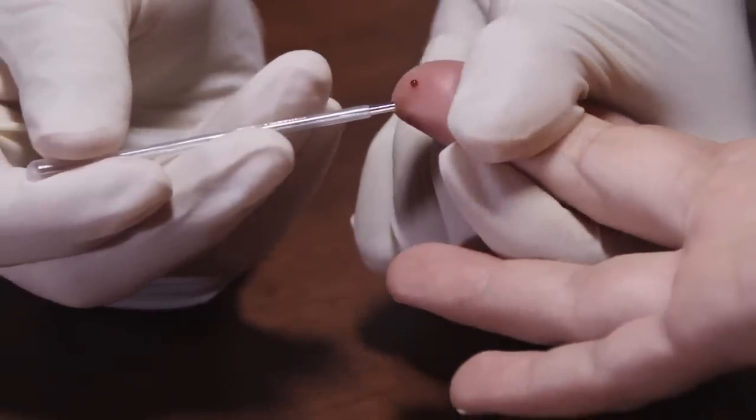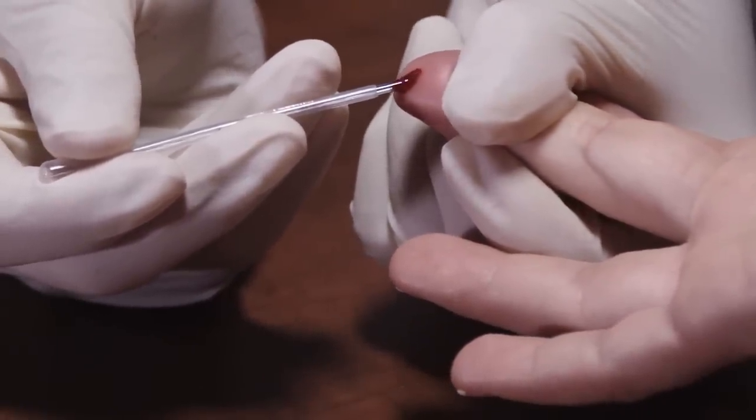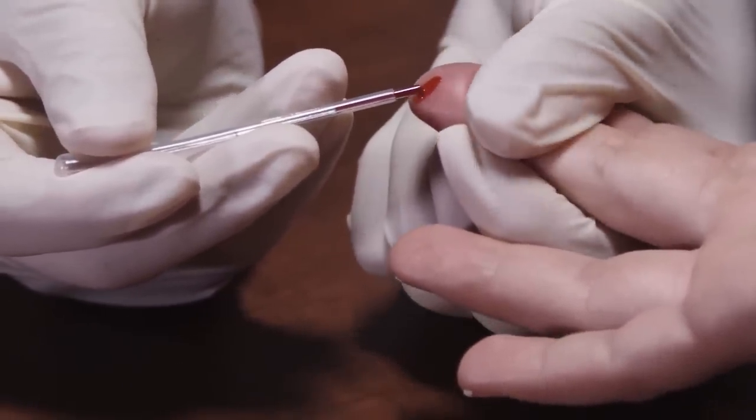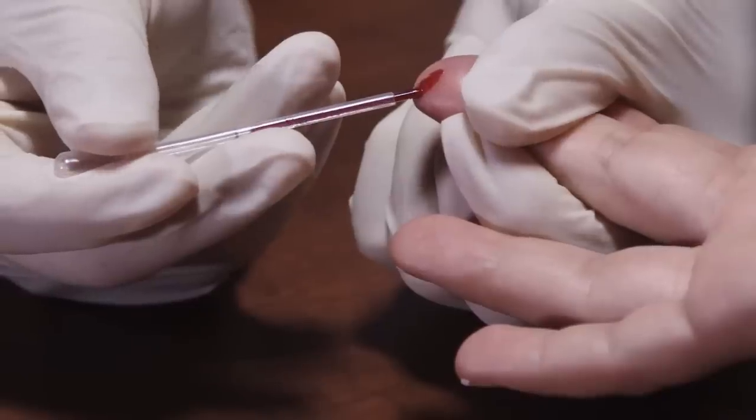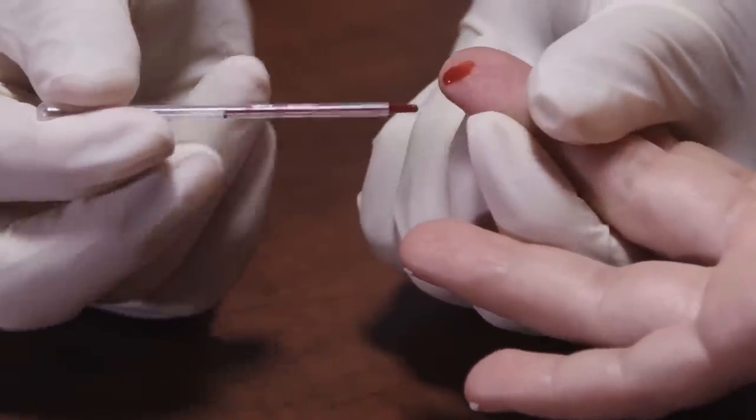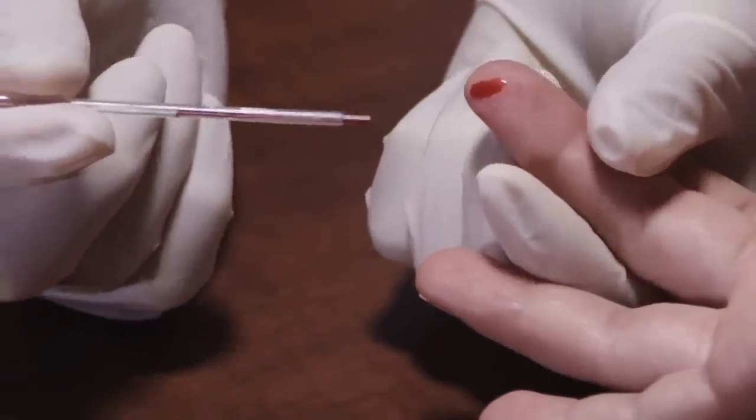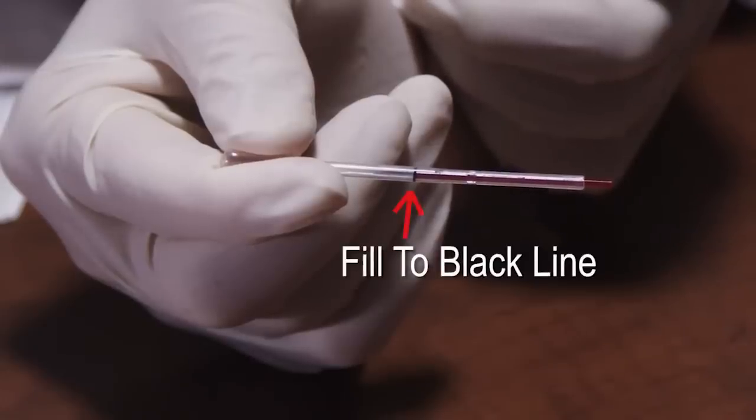Without squeezing the bulb, hold the capillary transfer tube horizontally and use the tip of the tube to touch the blood drop. Blood will flow automatically into the tube by capillary action. Fill the tube past the black line indicator.